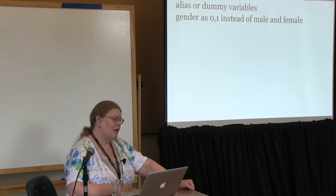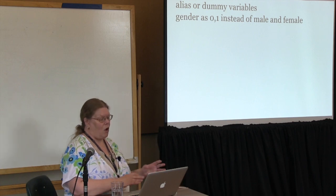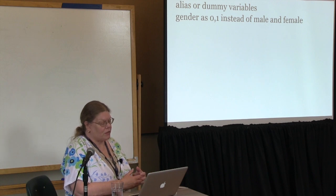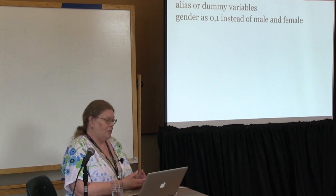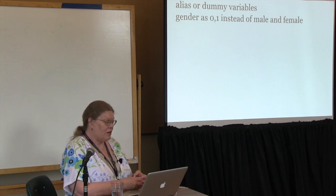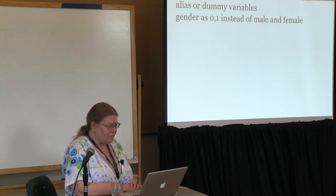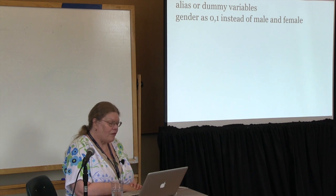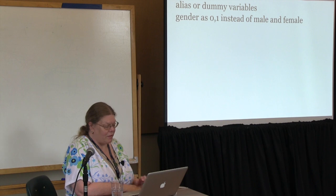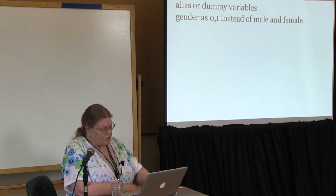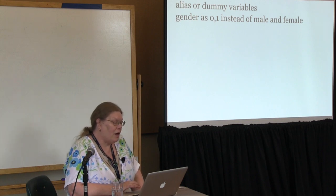Dummy variables — like most statistics programs, R wants to deal with numbers, not text or string. It's traditionally called dummy variables in statistics, but you can also call it aliasing, like when you alias a value to something else. Gender is often presented in columns of data as male and female, but you cannot use that to do statistical tests. You need to recode it as zero and one.